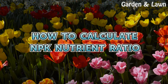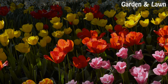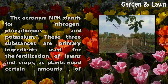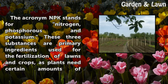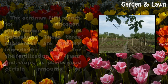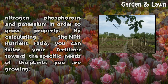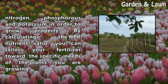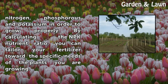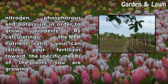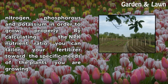How to Calculate NPK Nutrient Ratio. The acronym NPK stands for nitrogen, phosphorus and potassium. These three substances are primary ingredients used for the fertilization of lawns and crops, as plants need certain amounts of nitrogen, phosphorus and potassium in order to grow properly. By calculating the NPK nutrient ratio, you can tailor your fertilizer toward the specific needs of the plants you are growing.